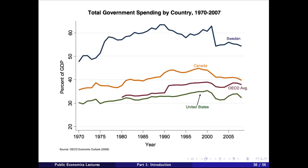Government spending by country shows vast differences — the US is considerably lower than other countries at around 30% when adding state and federal. One big picture question is what's the optimal level of government size. Do we want a Swedish-type social safety net with several months of paid maternity leave, or something more like the US system? There's substantial variation and big questions here.